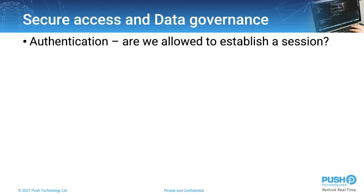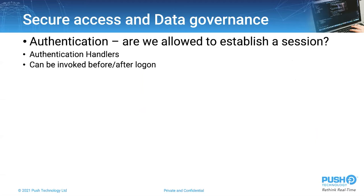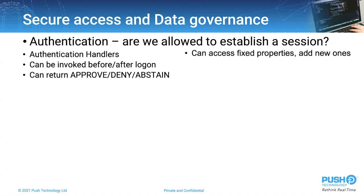Let's dig a little deeper into authentication and how it is enforced. The core process responsible is the authentication handler. These can be invoked before session establishment or after — for example, if some retrospective setup is required after a successful connection. They can be chained together with three possible outcomes: approve, deny, or abstain to the next in the chain. Crucially, the authentication handler can access properties defined on the session, or indeed add new properties to the session.